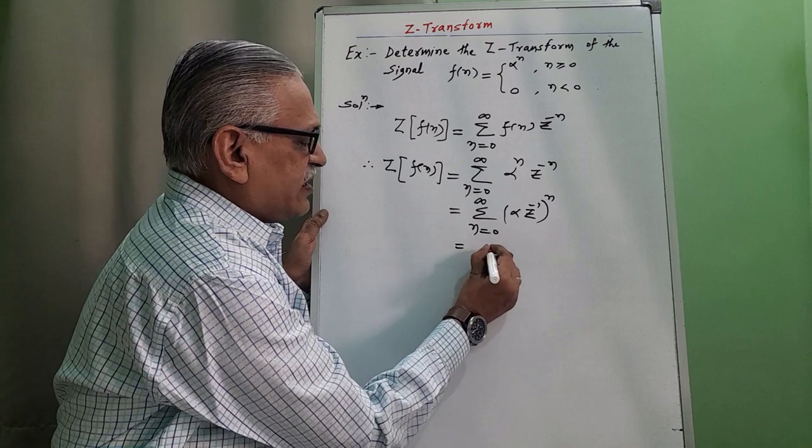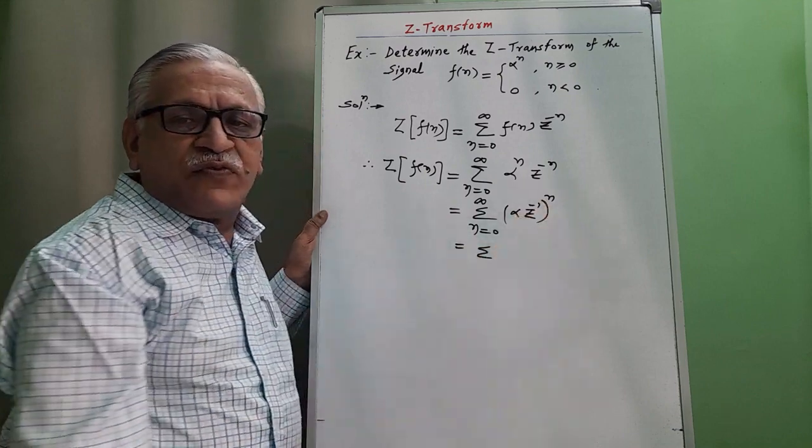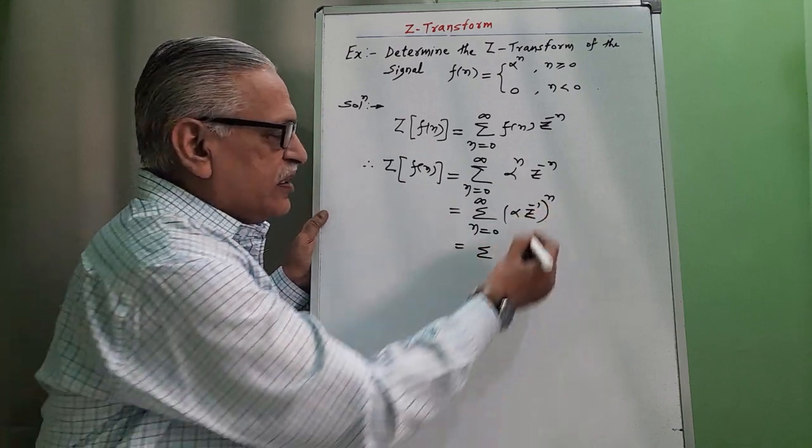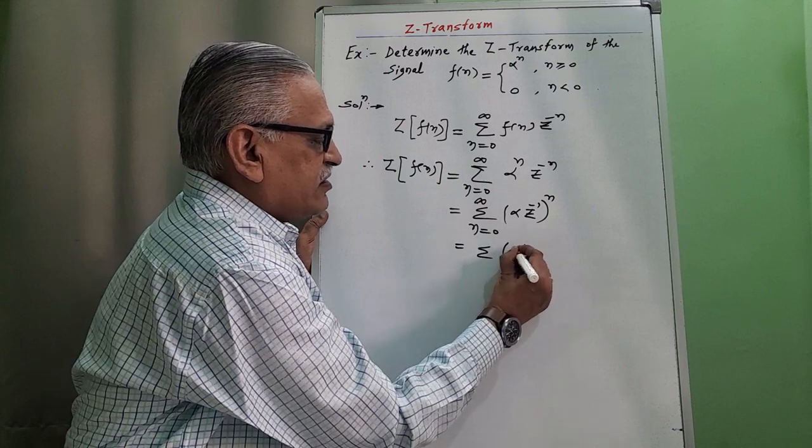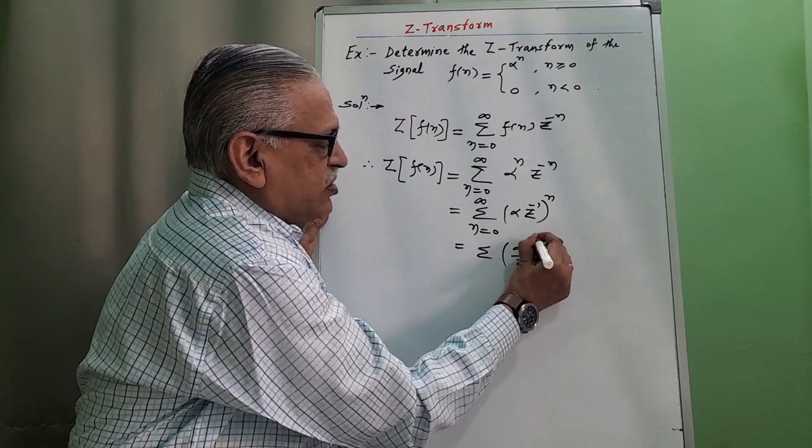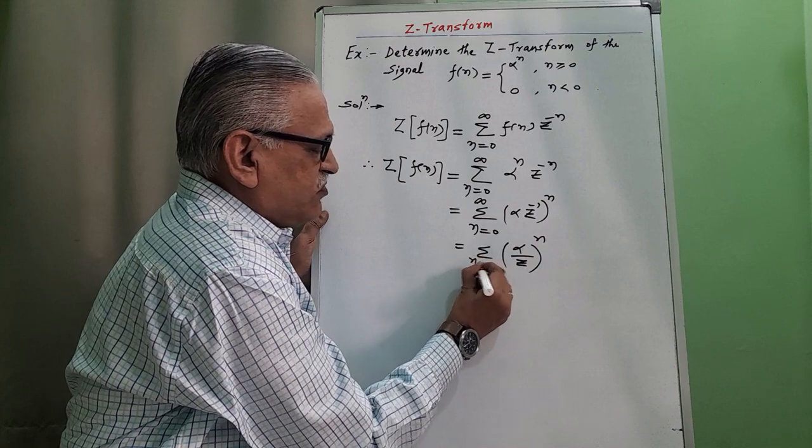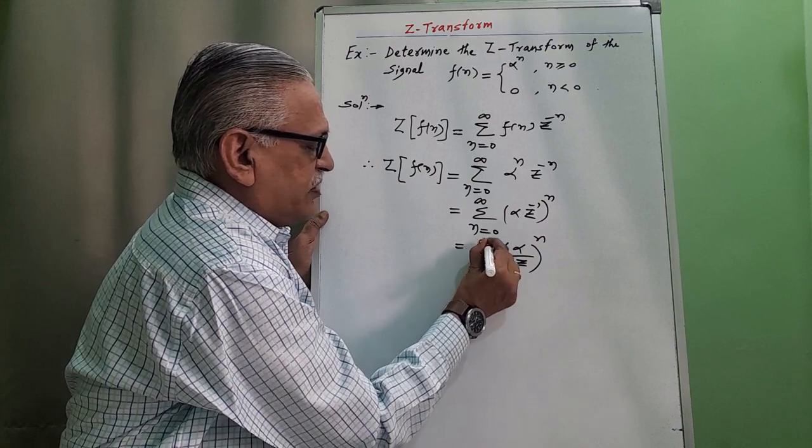This we can rewrite once again, transferring that Z raised to minus 1 to the denominator as alpha by Z, whole raised to n, n changes from 0 to infinity.